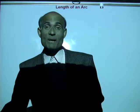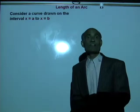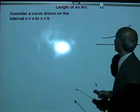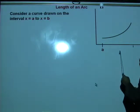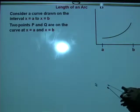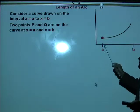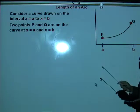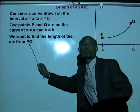We will start by developing a method to measure the length of an arc. Now, consider a curve drawn in the interval x equal to a to x equal to b. Here you have a curve drawn from x equal to a to x equal to b, and we need to find the length of that arc. Let's call this end of the curve as p, and the other end as q. We want to find the length of the arc pq.